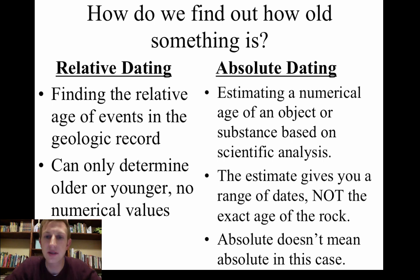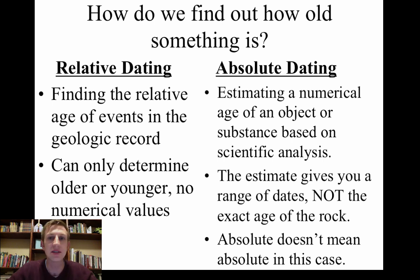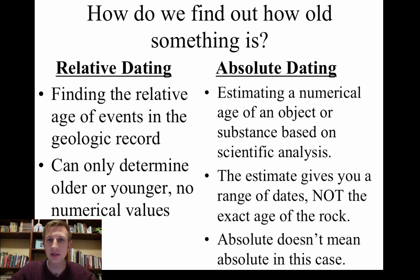Absolute dating, which we'll talk about another time, is estimating an actual number. And again, it's an estimation — it doesn't give you the exact date. A lot of times when you see on TV shows they say like this artifact is somewhere between 25 to 35,000 years old. That's because you get a range of dates with absolute dating. You don't necessarily get a hard and fast date, so absolute isn't actually like absolute.